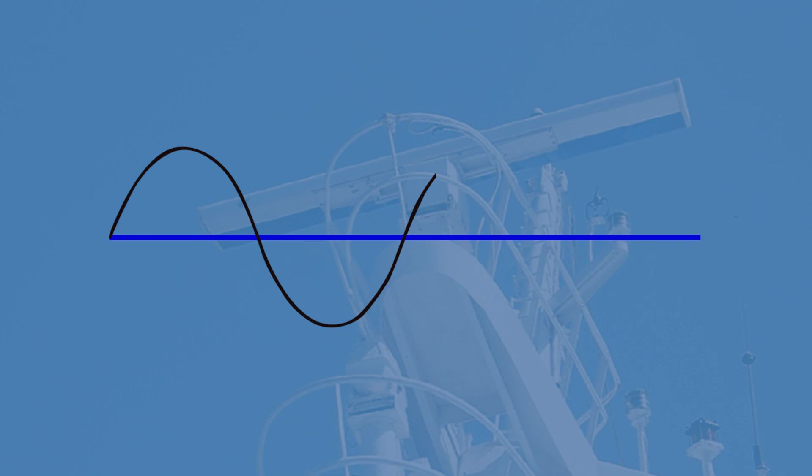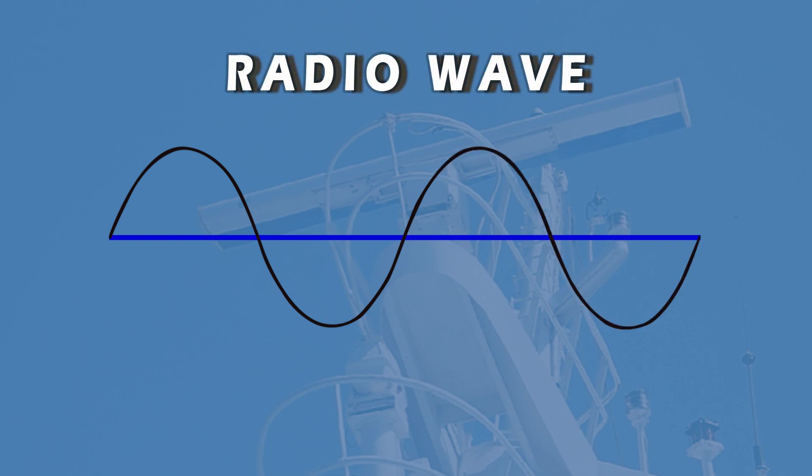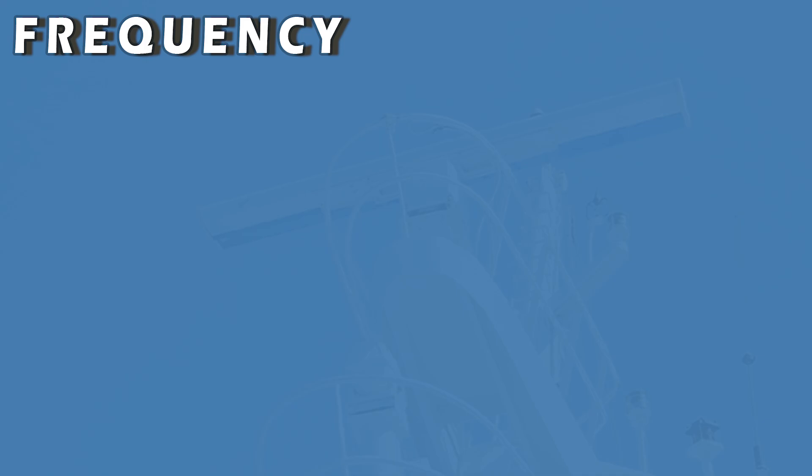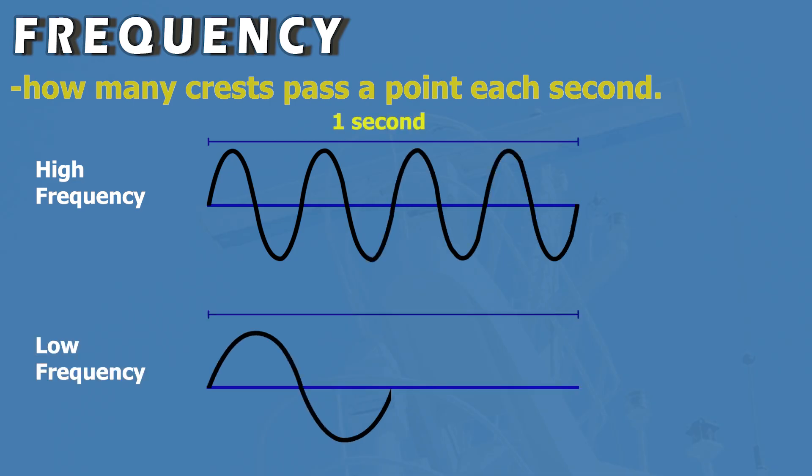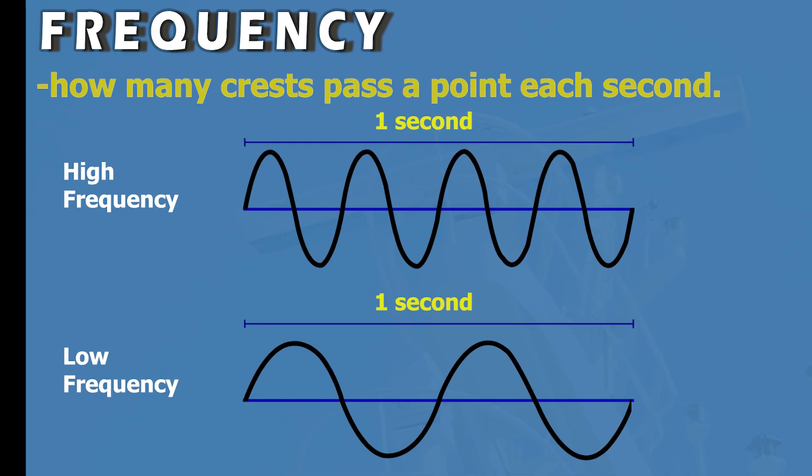Radar operates using radio waves, a type of electromagnetic energy made up of crests and troughs, like waves on the sea. The wavelength is the distance between two crests and the frequency is how many crests pass a point each second. When the frequency is high, the wavelength is short, and when the frequency is low, the wavelength is long. These two always go hand in hand.